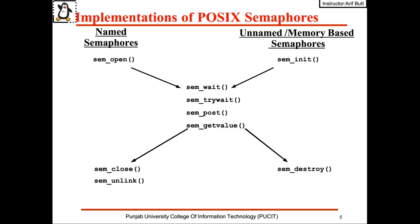The other type of POSIX semaphore is the unnamed or memory-based semaphore. We use sem_init to create or initialize a memory-based semaphore. To share an unnamed semaphore among threads of a process it needs to be created in a global variable or in a heap variable. To share it among multiple processes it must be placed in a shared memory region. When the semaphore is no longer required and before the memory it occupies is deallocated, the semaphore must be destroyed using the sem_destroy call.